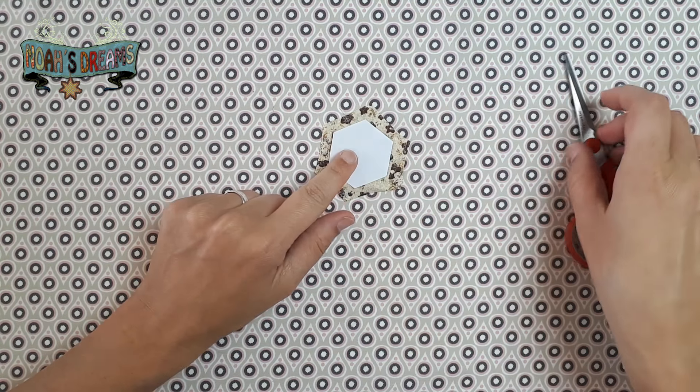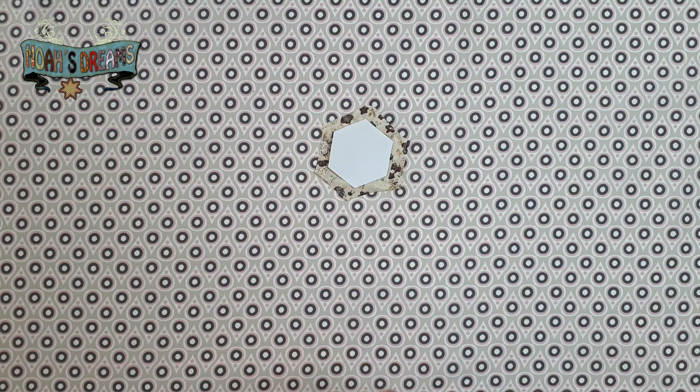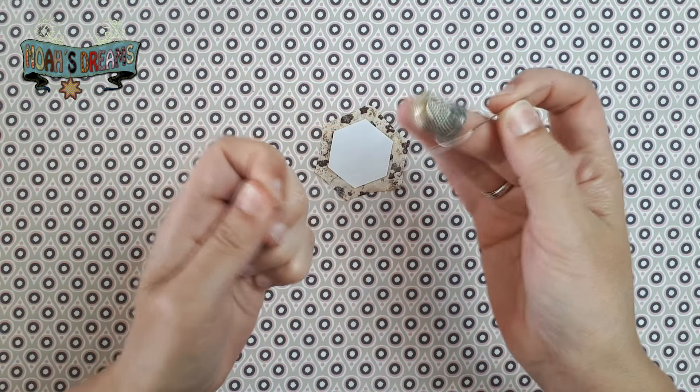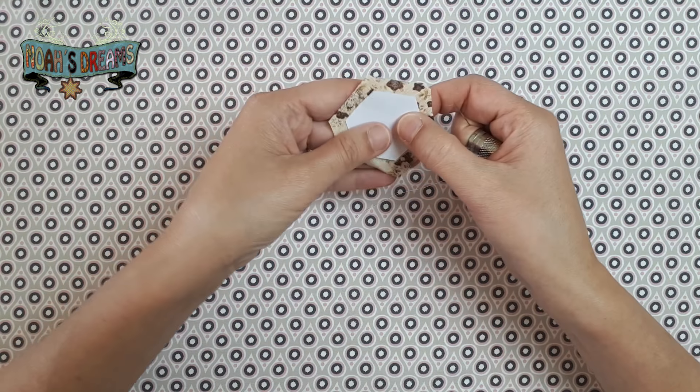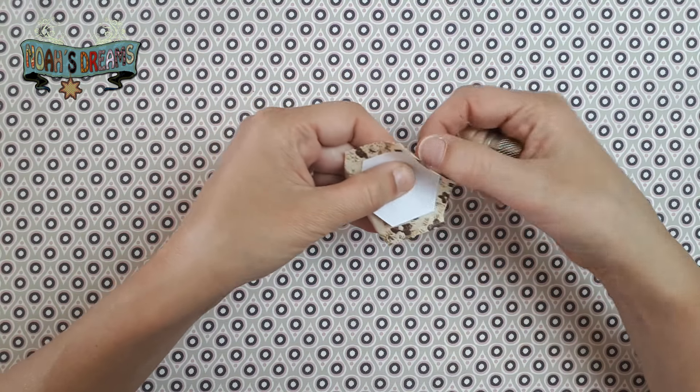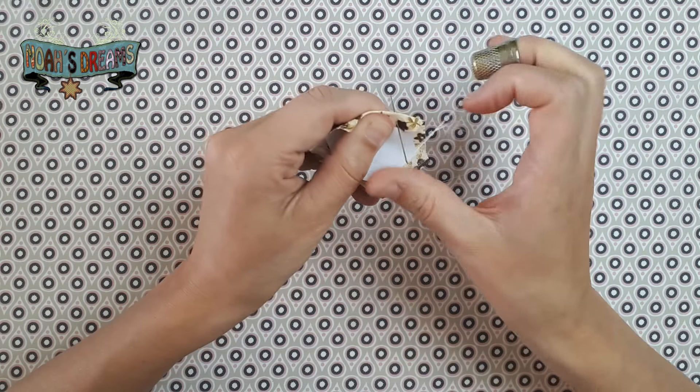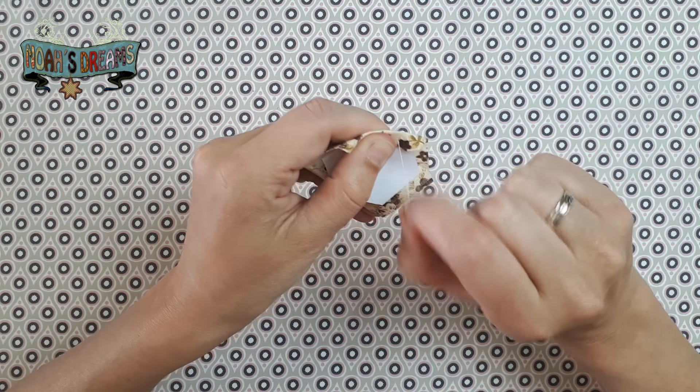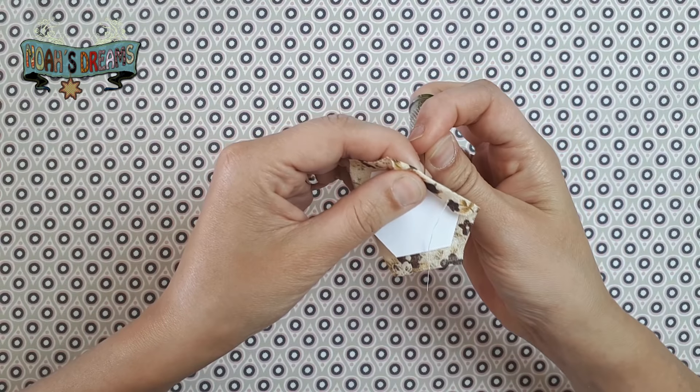Aquí tendríamos el trocito de tela replanteado en la plantilla. Ahora lo que tenemos que hacer es hilvanarlo, sujetarlo a la plantilla. Cogemos una aguja con hilo cualquiera. No tiene que ser un hilo de buena calidad porque es un hilo que se va a retirar. Cualquier hilo que tengáis que no os atreváis a utilizar en un quilt por su baja calidad lo aprovechamos. Pinchamos, hay una puntada, no hago ni nudo ni nada porque al final es un hilvan y luego se va a retirar.